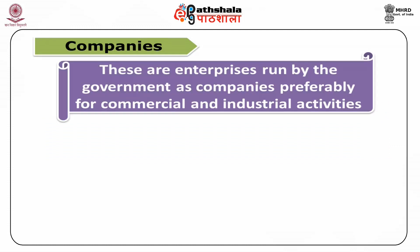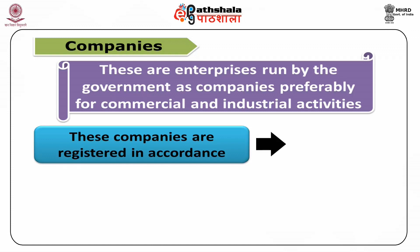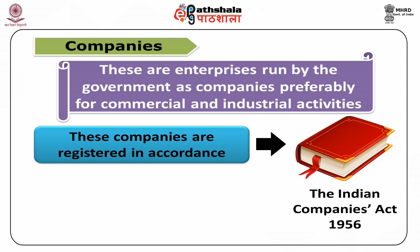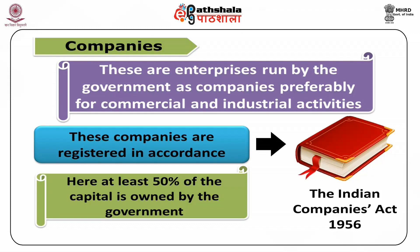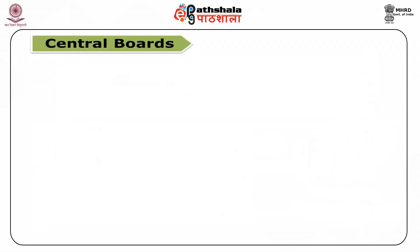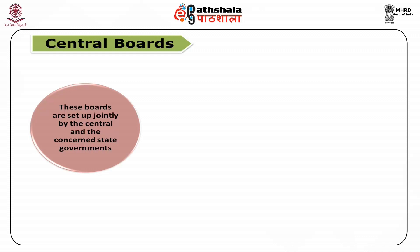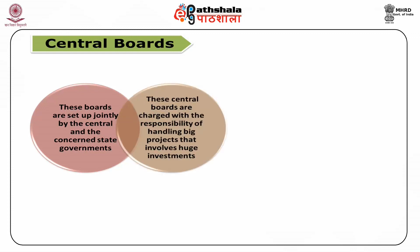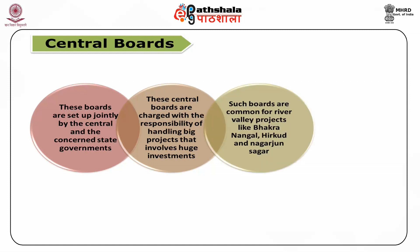Fourth, Companies: these are enterprises run by the government as companies, preferably for commercial and industrial activities. These companies are registered in accordance with the Indian Companies Act 1956. Here, at least 50% of the capital is owned by the government. Hindustan Machine Tools Limited, NTPC Limited etc. are examples of companies. Fifth, Central Boards: these boards are set up jointly by the central and the concerned state governments, charged with the responsibility of handling big projects that involve huge investments. Such boards are common for river valley projects like Bhakra Nangal, Hirakud and Nagarjuna Sagar. Now, a similar board is working towards cleaning the Ganga River.